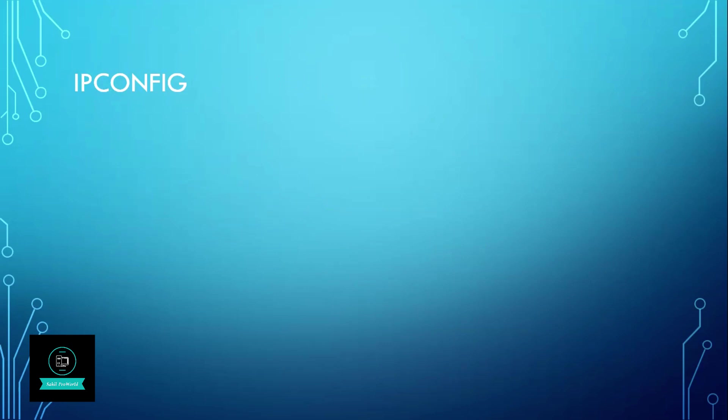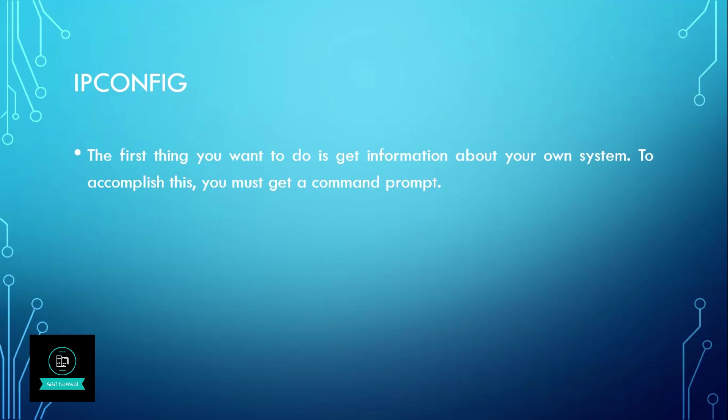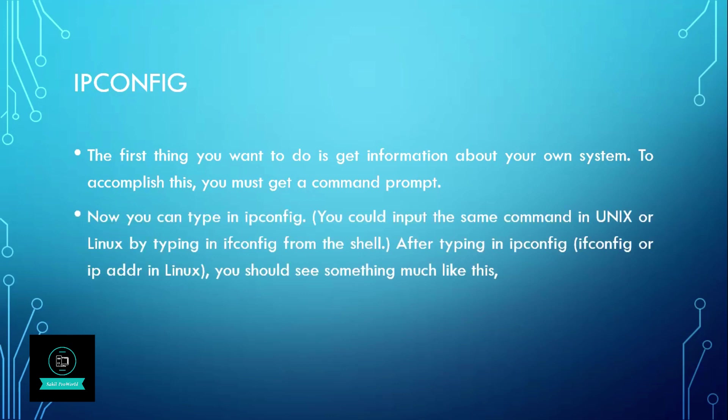Our first command is ipconfig. Just tap Windows plus R and type cmd to open the command prompt in Windows. The first thing you want to do is get information about your own system. To accomplish this you must get a command prompt. Now you can type in ipconfig.